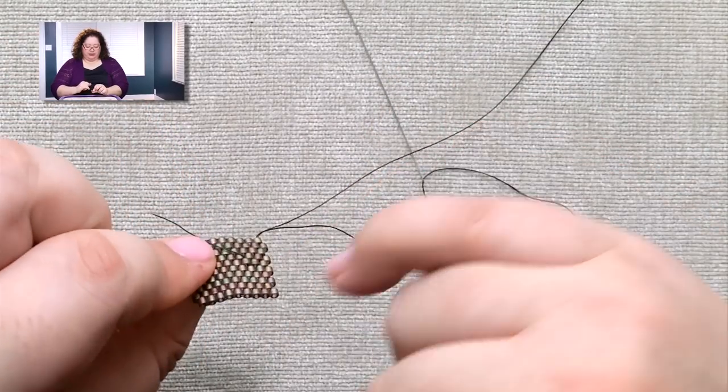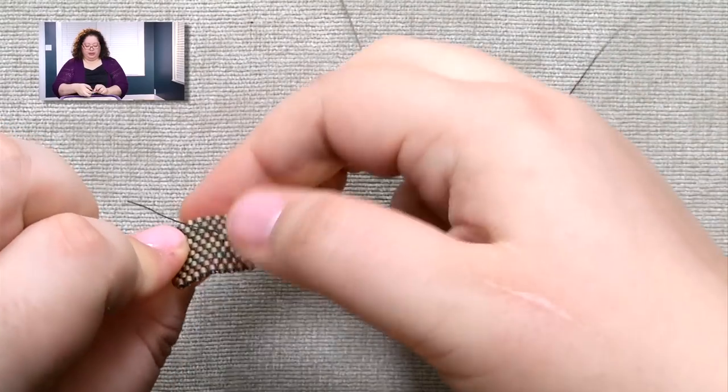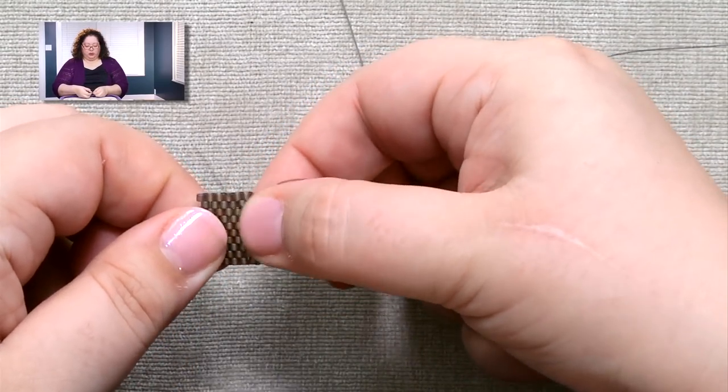Depending, you might not be able to see this, but these beads that I went through, they're sitting up a little bit because of the extra passes of thread. All you have to do is just wiggle them a little bit, and then it makes it sit right back down again.